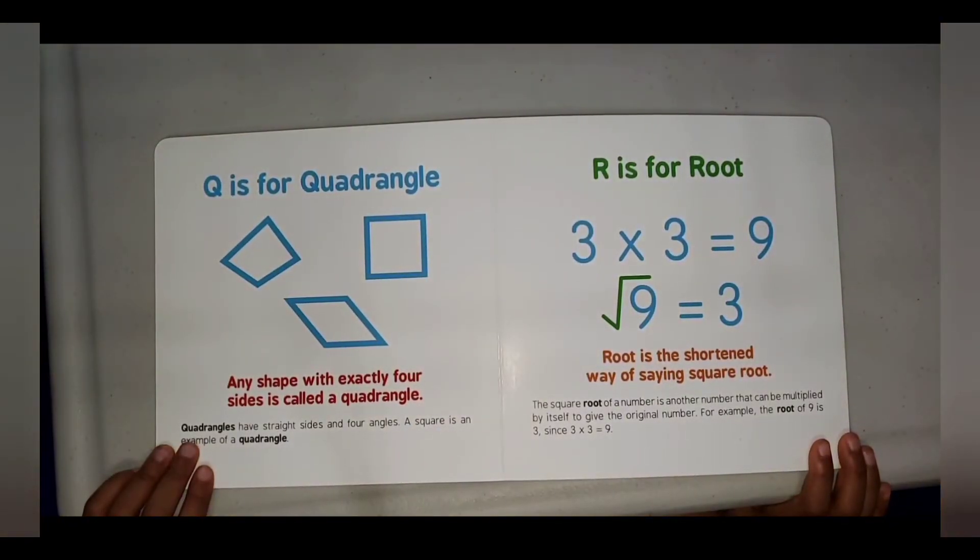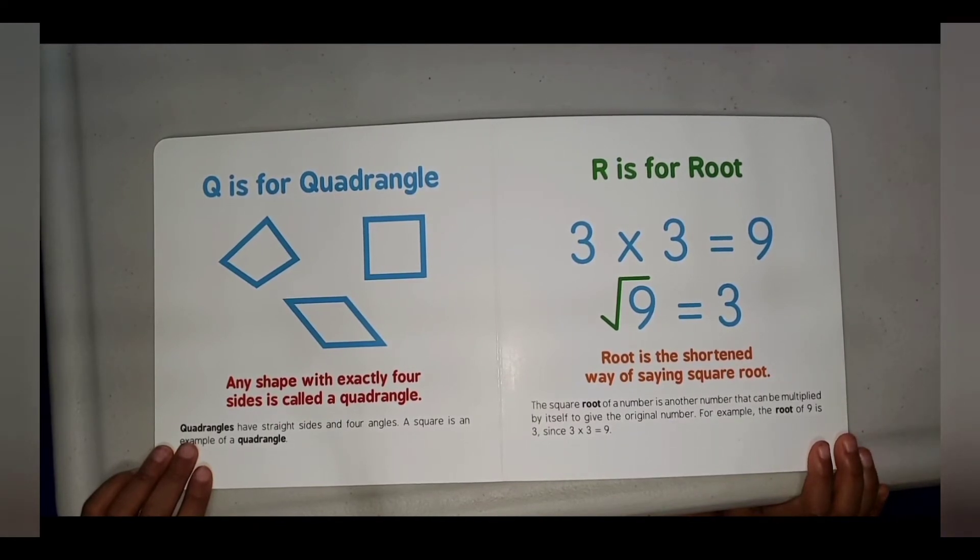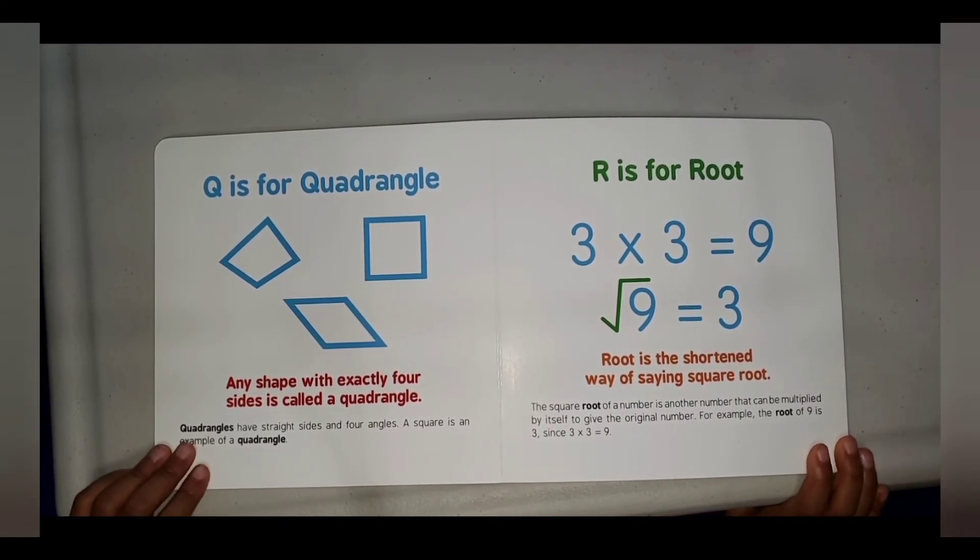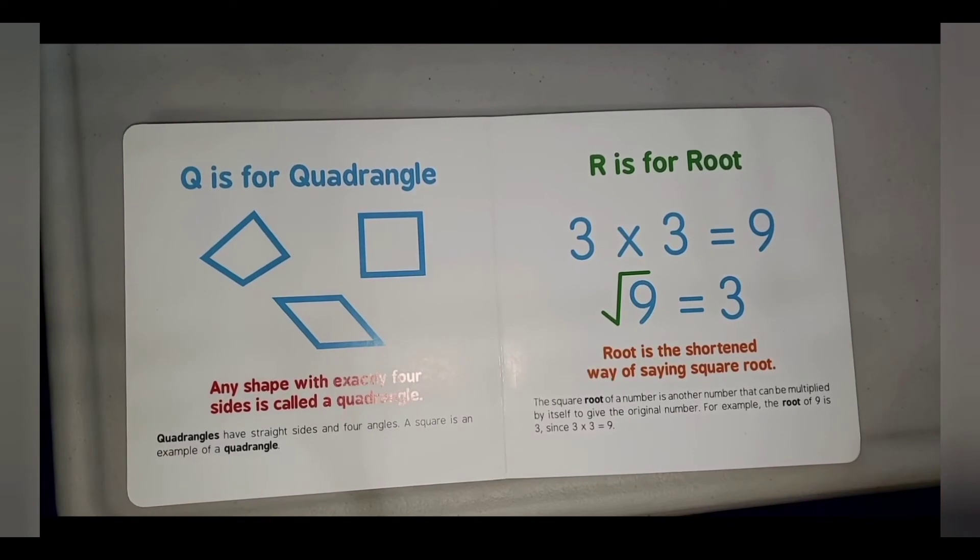Q is for Quadrangle. Any shape with exactly 4 sides is called a quadrangle. Quadrangles have straight sides and 4 angles. A square is an example of a quadrangle.